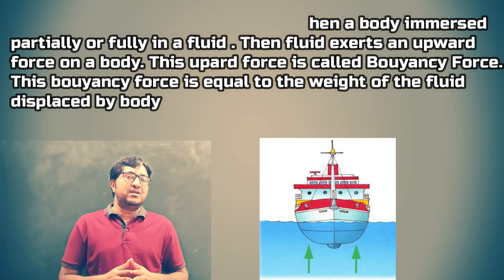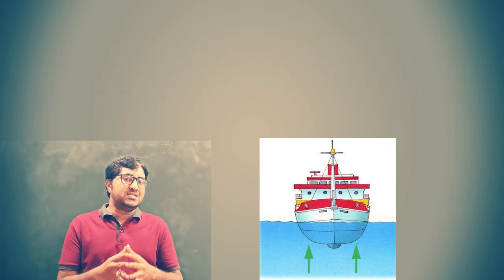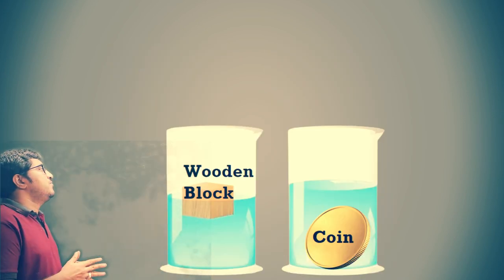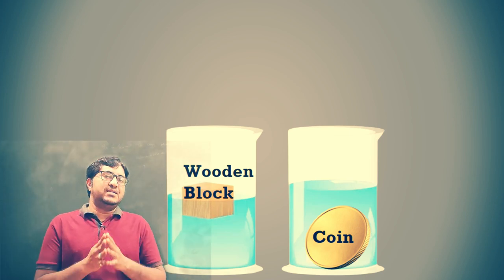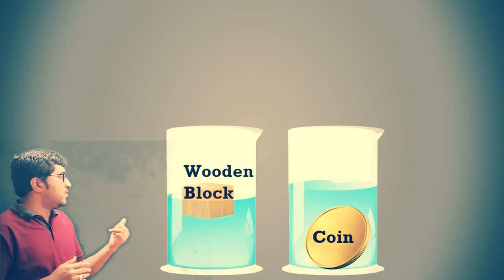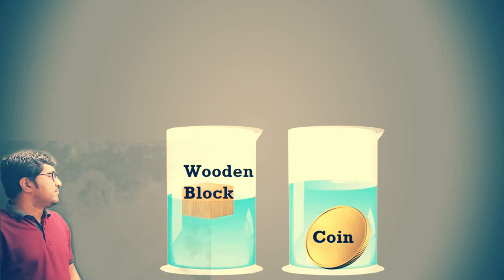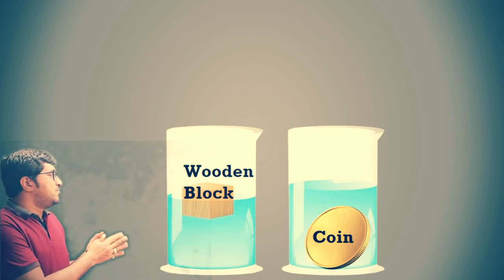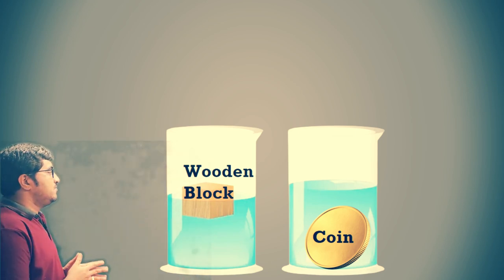Archimedes' principle is useful in the design of ships as well as submarines. The sinking and floating depends on the density of water and the density of the object. If the density of the object is less, it can easily float on the surface of water. For example, the density of wood is less than water — water's density is 1000 kg/m³, and the density of wood is less than 1000 — so wood can easily float.